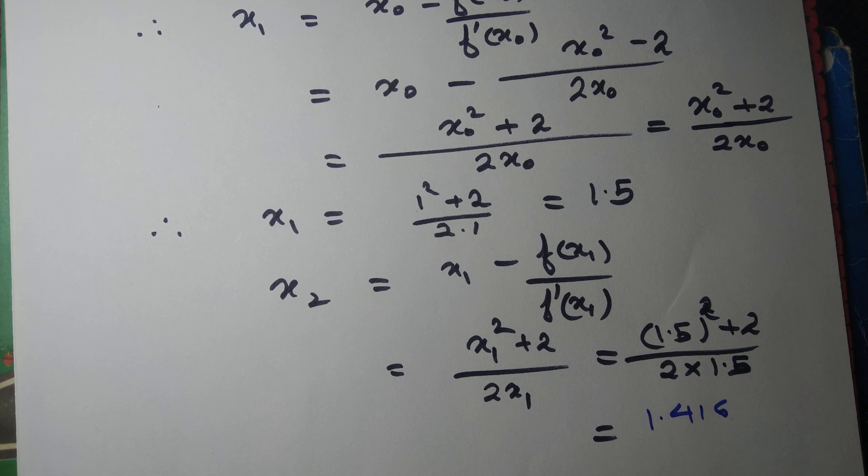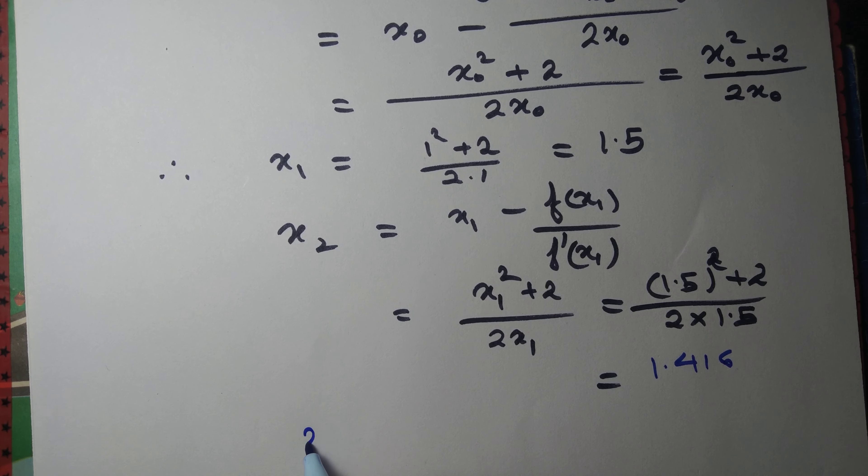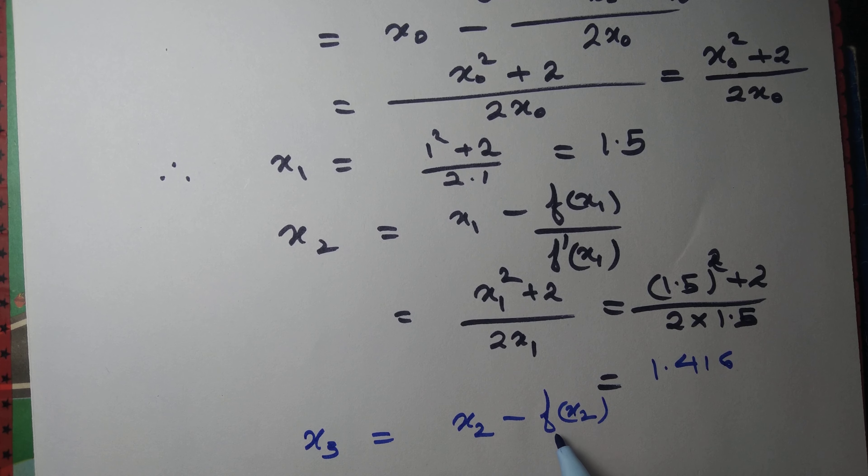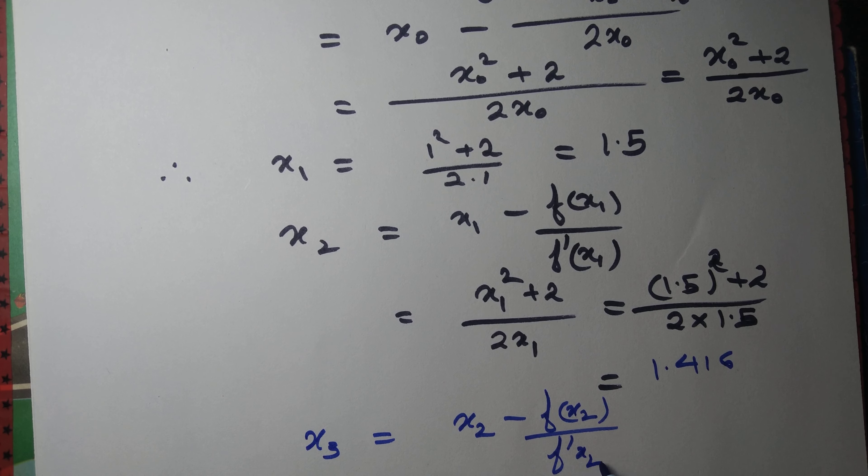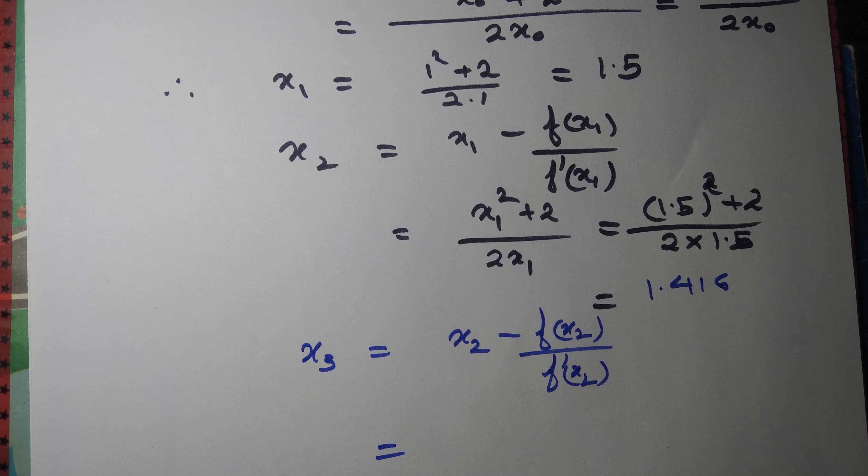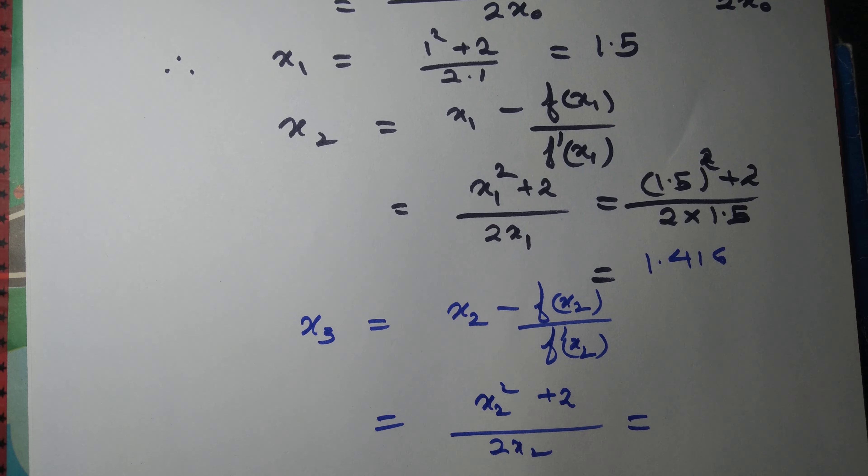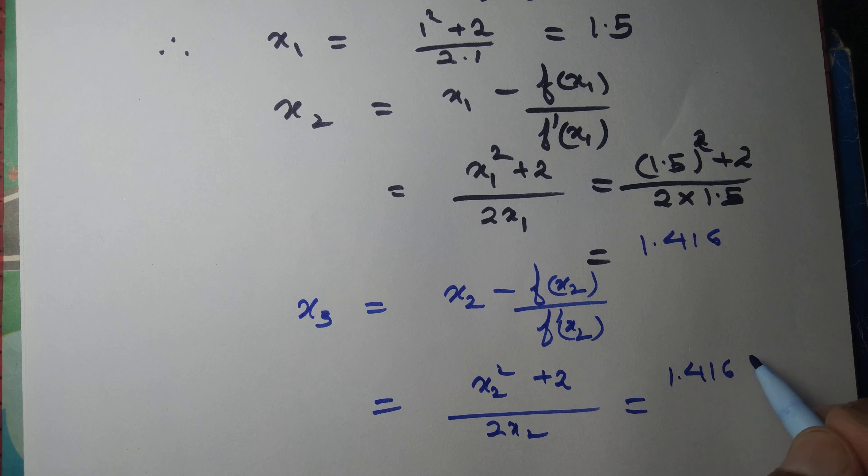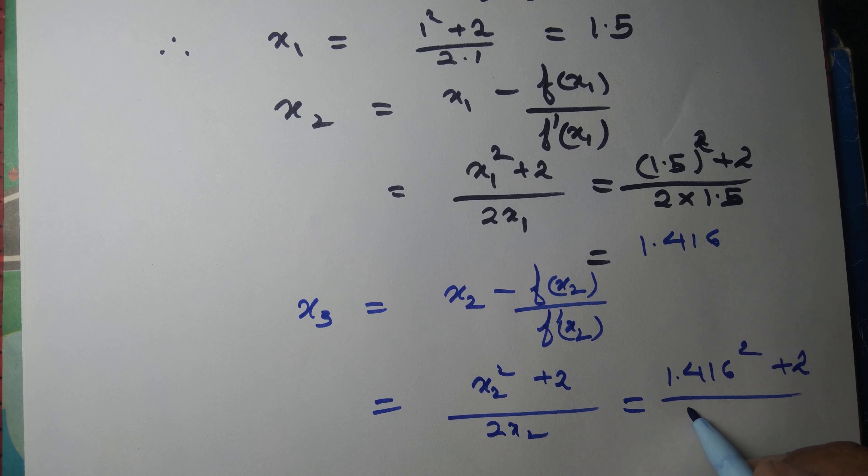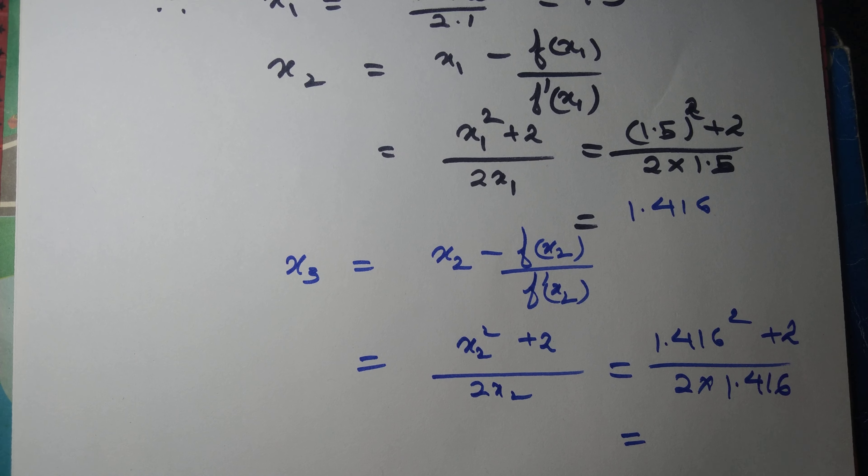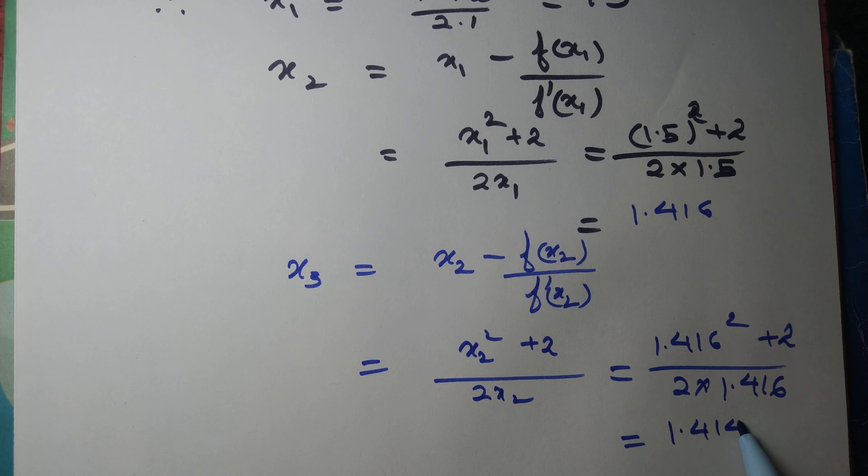So we have determined x₂, now let's find x₃. We have to repeat everything once again: x₃ = x₂ minus f(x₂) divided by f'(x₂). We can write it as (x₂² + 2)/(2x₂). That equals (1.416² + 2)/(2 × 1.416), which equals 1.41421.